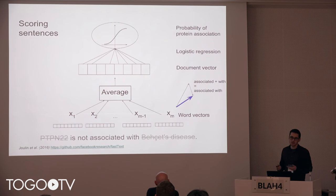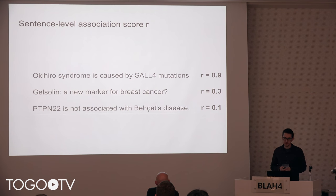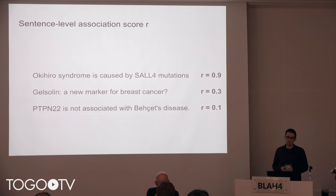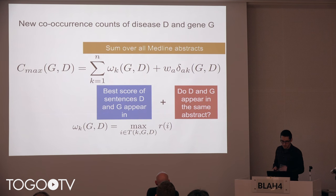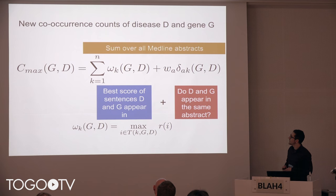On top of that, we train a very simple logistic regression model to find the probability that the sentence actually talks about an association between a disease and a gene. This is a supervised learning model we train and then use in subsequent scoring. We would expect higher scores for sentences with a clear association stated, medium scores for ambiguous sentences, and low scores for sentences that clearly negate an association. To integrate this into the scoring model, we simply replace the constant sentence score with the score from the supervised learning model, then sum over all documents as before.